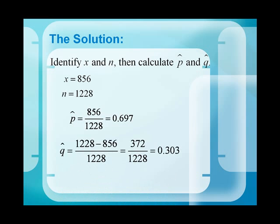And q-hat, remember, is the number of failures, so that would be the difference between the sample size and the number of successes, or 372, and we're still going to divide by our sample size, n, of 1,228, and we get 0.303.